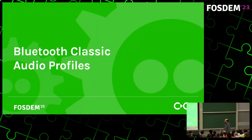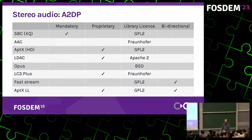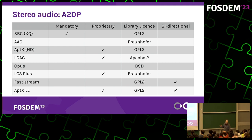A2DP stands for Advanced Audio Distribution Profile. It aims to manage audio streaming between media players and headsets or speakers. In this table you can see the supported codecs. The first one is the SBC codec, which is low complexity, fast, and lossy, but is implemented on all devices. The A2DP specification allows other codecs like AAC, which is optional and not implemented on all devices.